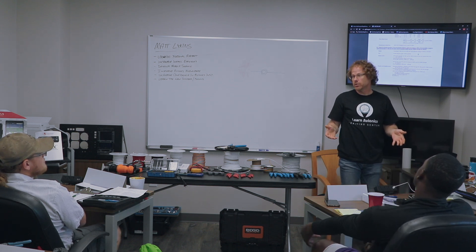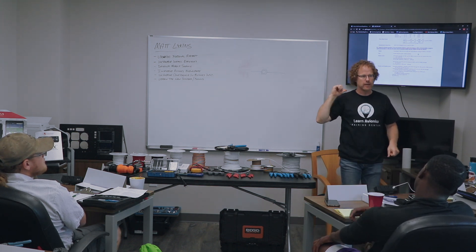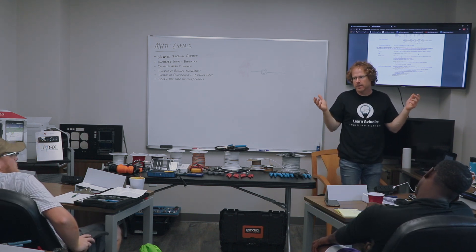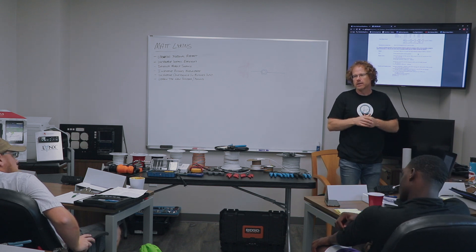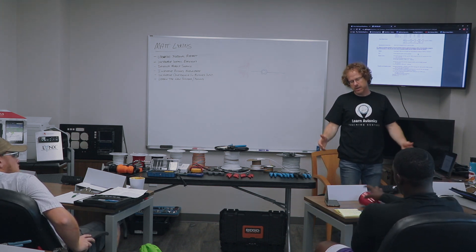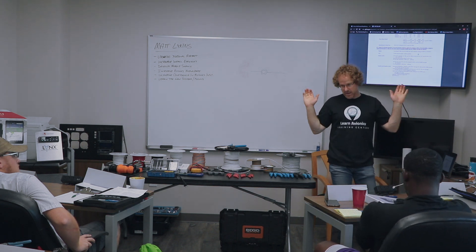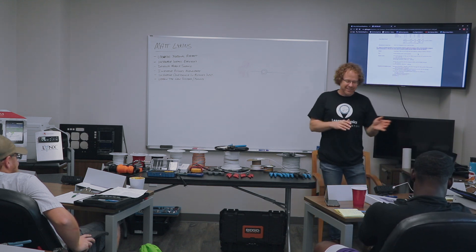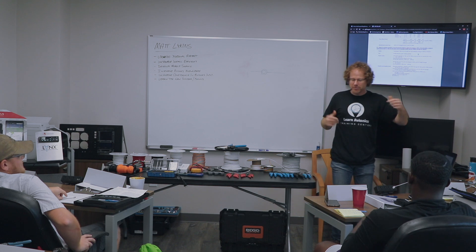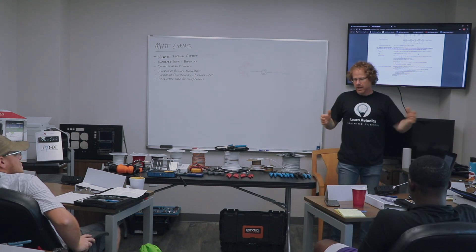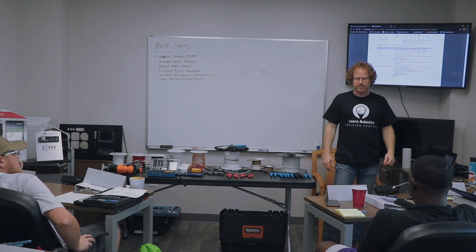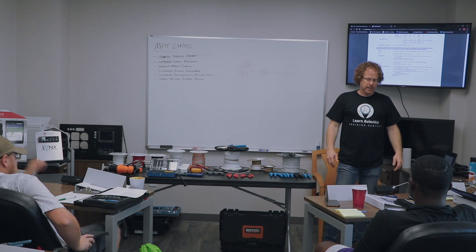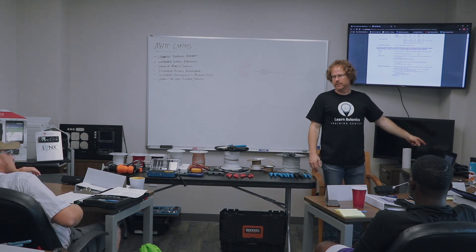He calls me and says he wants to put a G5 in his SR22 — just swap out the attitude indicator for the G5. He said the attitude indicator isn't tied to anything, so he just wants to drop it in. I said, well, power, ground, pitot, static — done, right? Wrong. It seemed straightforward, so I ordered the G5, got it installed, got him on the schedule, did the install, calibrated it, did all the configs, everything's working great, he's excited, and I sit down to do my paperwork.